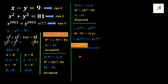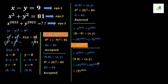Now substituting (9, 0) into equation 3: 9 to the power 2022 plus 0 to the power 2022 equals 9 to the power 2022 plus 0, which equals 9 to the power 2022. Both ordered pairs give the same result, so the final answer is 9 to the power 2022.